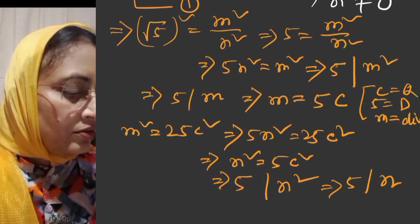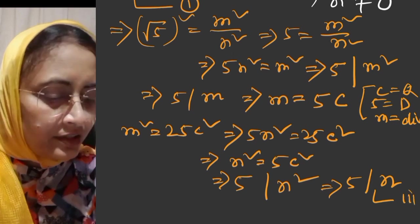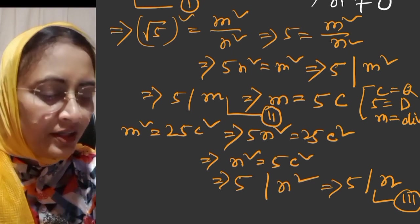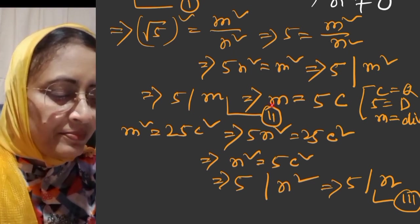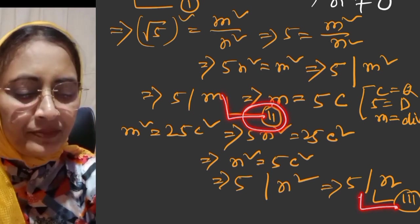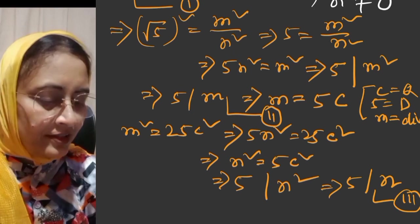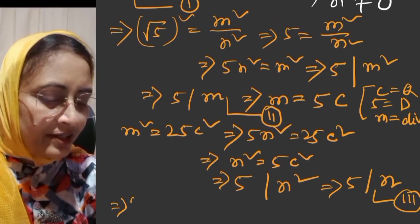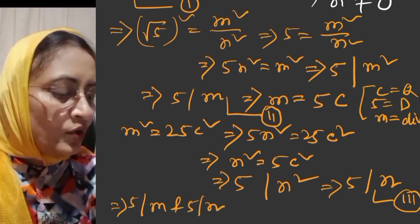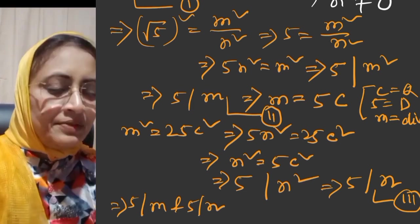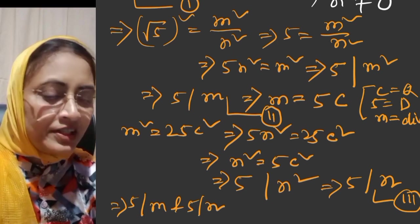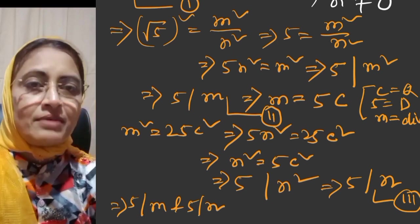So from equation 3 we have 5 divides m, and from equation 4 we have 5 divides n. That means m and n have at least one common factor, 5, which contradicts that m and n are coprime.